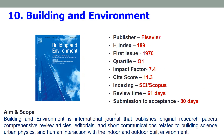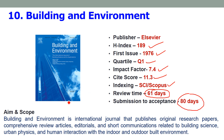Tenth is Building and Environment, published by Elsevier with an H-index of 189. The first issue was published in 1976. It is a Quartile 1 journal with an impact factor of 7.4 and a site score of 11.3. It is an SCI and Scopus indexed journal. Total review time is about 2 months and submission to acceptance is 80 days, meaning within 3 months your paper will get accepted. The journal publishes original research papers, review articles, and short communications related to building science, urban physics, and human interaction with the indoor and outdoor built environment.